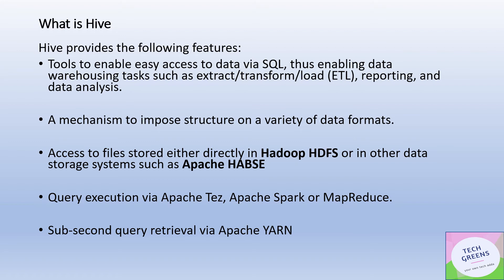There are three execution engines available with Hive: Apache Tez, MapReduce, and Apache Spark. When you fire any query in Hive, it is sent to these execution engines, which process the data retrieval request. If it's MapReduce, it will do the mapping and reducing of tasks. If it's Spark, in-memory computation happens and results are returned. Hive can also provide sub-second query retrieval with Apache Tez along with MapReduce as the engine.